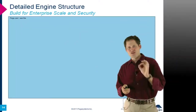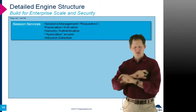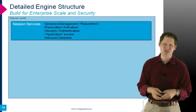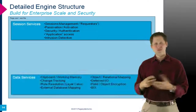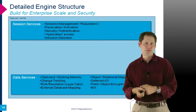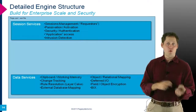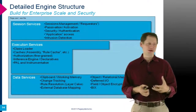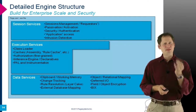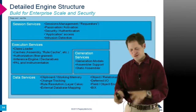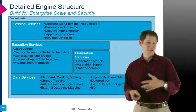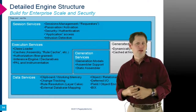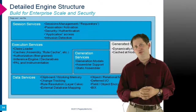The engine breaks into four areas: session services — managing user sessions, authentication, authorization, and intrusion detection checks; data services — database access, object-relational mapping, and encryption at the field or object level both in the database and in memory; execution services — actually executing business processes and business rules; and generation services — taking a model of a business process or rule and turning it into executable code. The remaining major part of the engine is the actual generated code representing processes, rules, screens, and integrations.